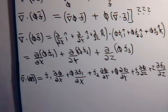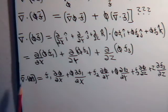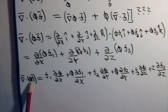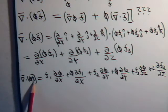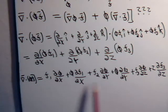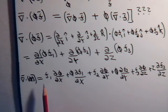In the last video we were working with this expression, when we take the dot product of the del operator with the scalar times the vector function f. This is the expression that we got, and we want to examine this in more detail now.